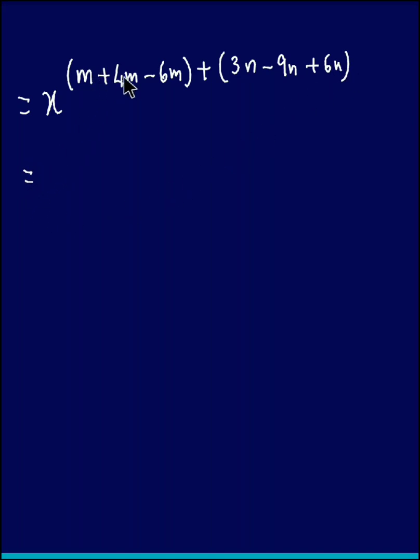Now if we simplify this becomes 5m minus 6m. So that is x raised to minus m. Now 3 plus 6 is 9, so 9 minus 9 becomes 0. So 9n minus 9n is 0. So we are left with x raised to minus m.